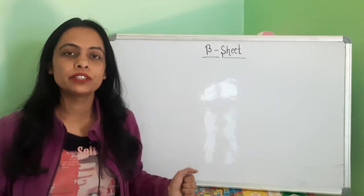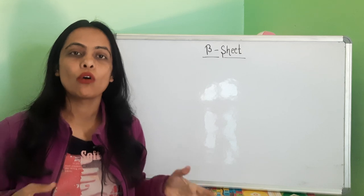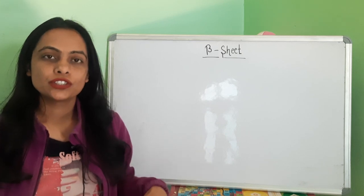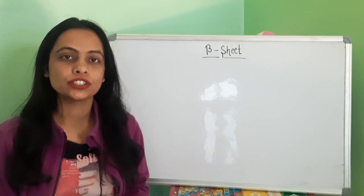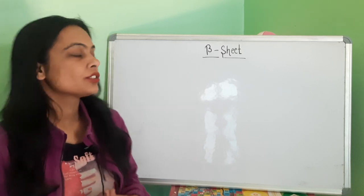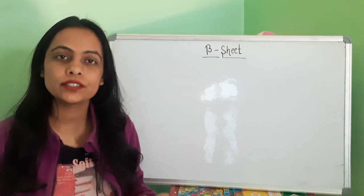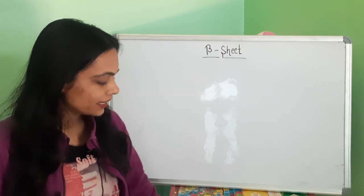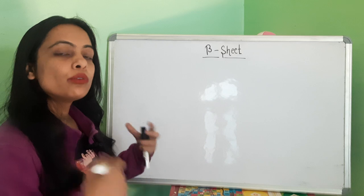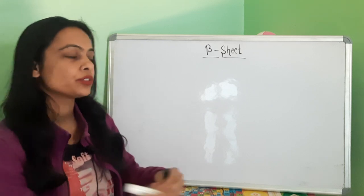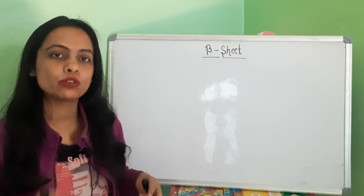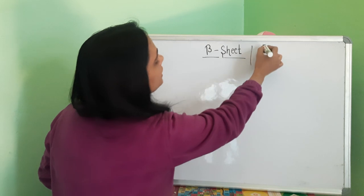Today in this lecture we will discuss about the secondary structure of protein, that is the beta-sheet structure. In the last lecture we already discussed about the alpha helical structure, which is the most common secondary structure present in proteins. The second most common secondary structure is beta-sheets. Scientists Pauling and Corey have predicted these secondary structures.